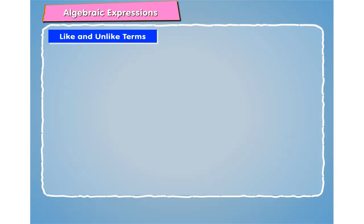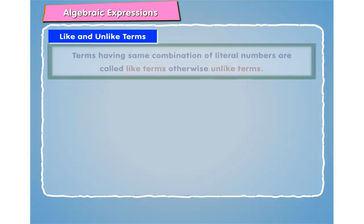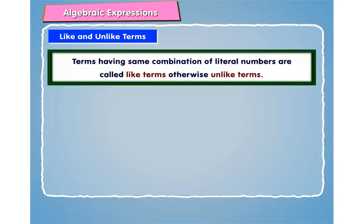Let's now learn about like and unlike terms. The terms having same combination of literal numbers are called like terms, otherwise unlike terms.